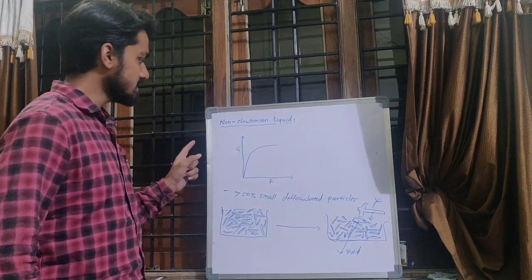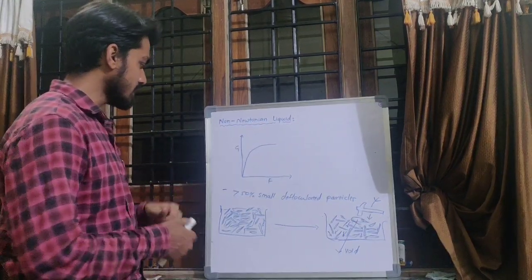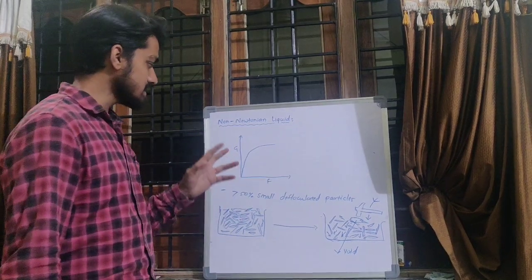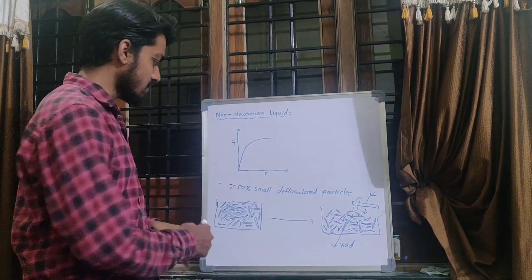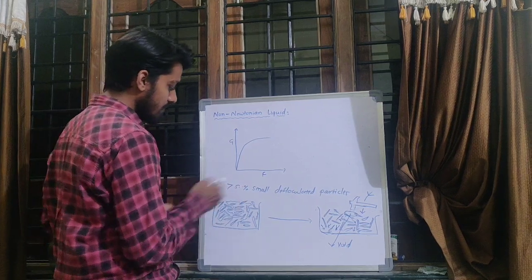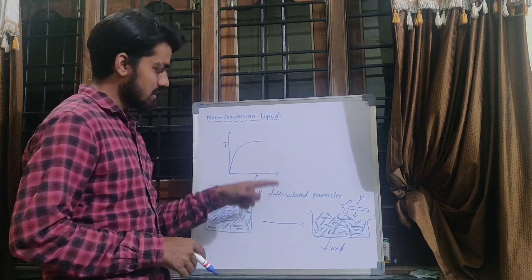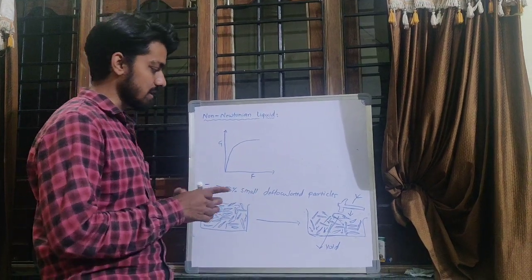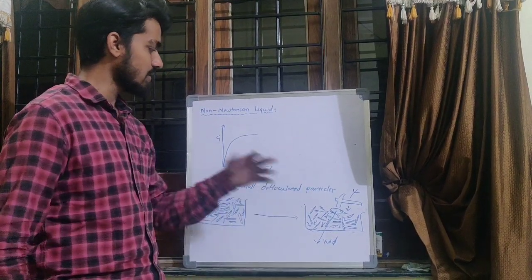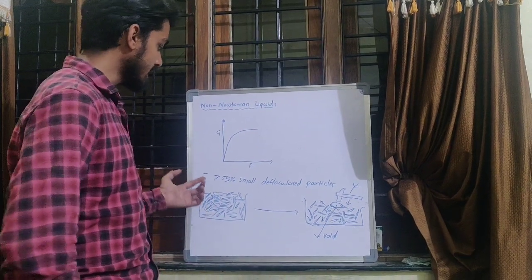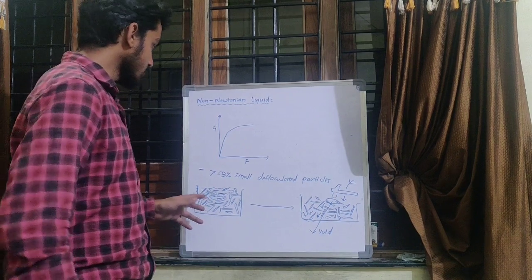In non-Newtonian liquid, there is a dilatant type of flow. In dilatant flow, there is a presence of more than 55 percent defloculated particles — that means the concentration of defloculated particles in that dispersion is higher.